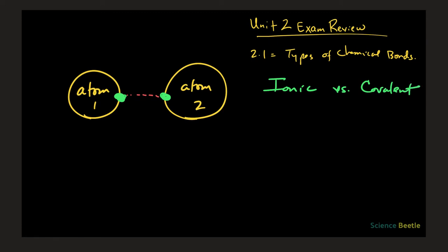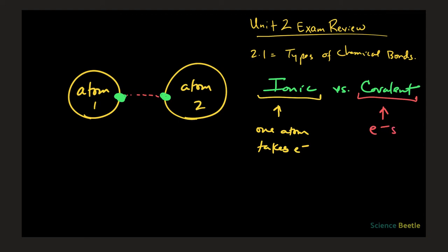These are the two important ones you'll need to worry about. Ultimately, it comes down to whether those electrons are going to be shared or whether they're going to be taken by one atom or the other. In an ionic situation, one atom takes the electrons; in the covalent case, the electrons are essentially shared between the two.